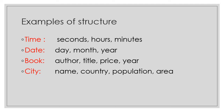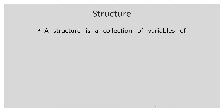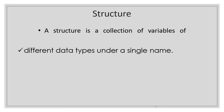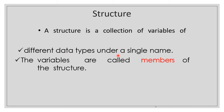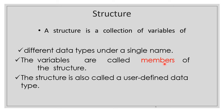The structure's data types are different. A structure is a collection of variables of different data types under a single name. The variables are called members of the structure. Structure is also called a user-defined data type, or programmer-defined data type.